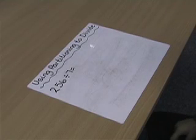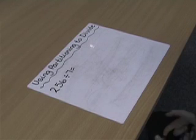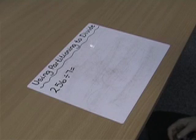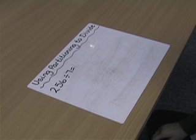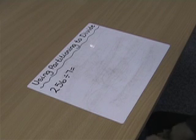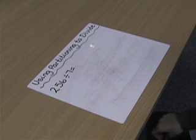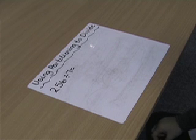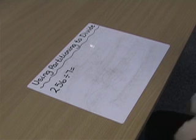Using partitioning to divide. 256 divided by 7 equals something. I'm going to partition 256 into numbers that will divide by 7.